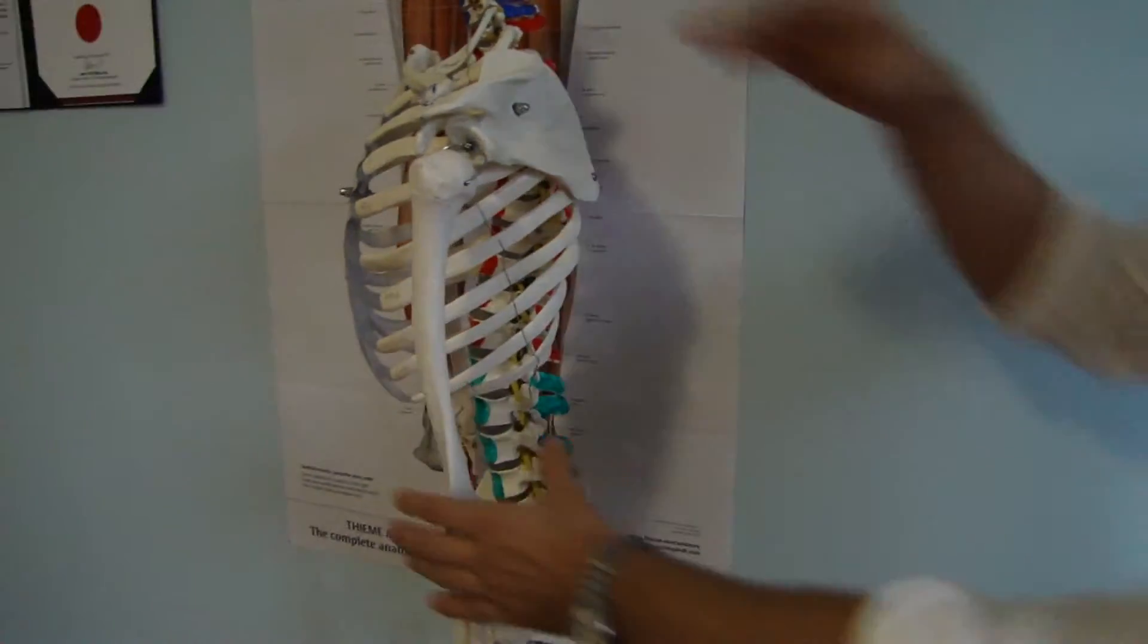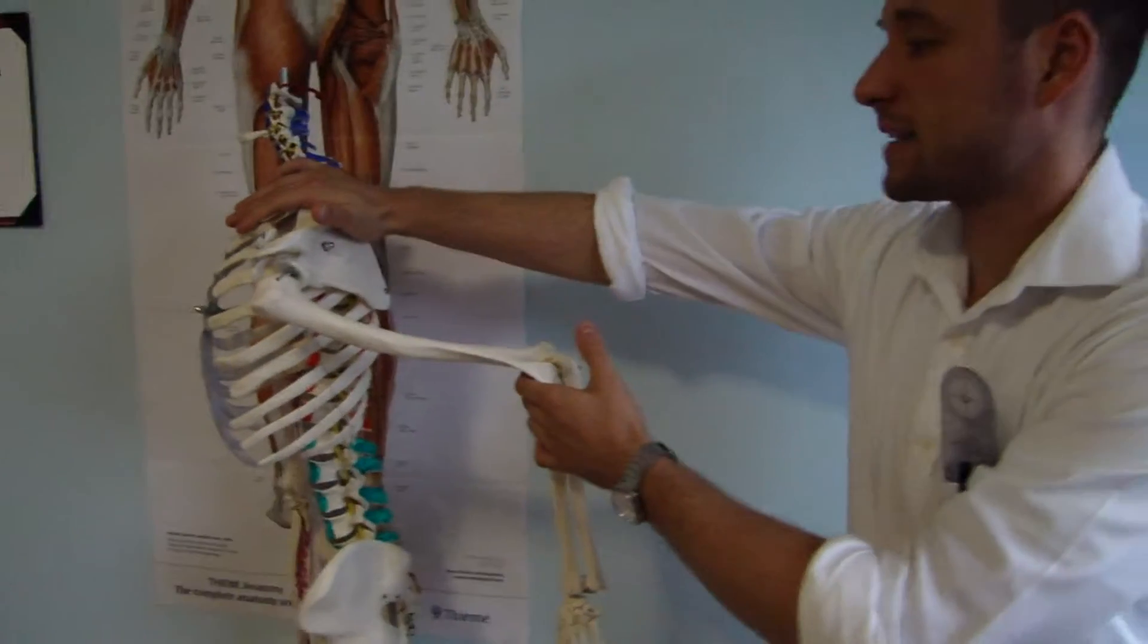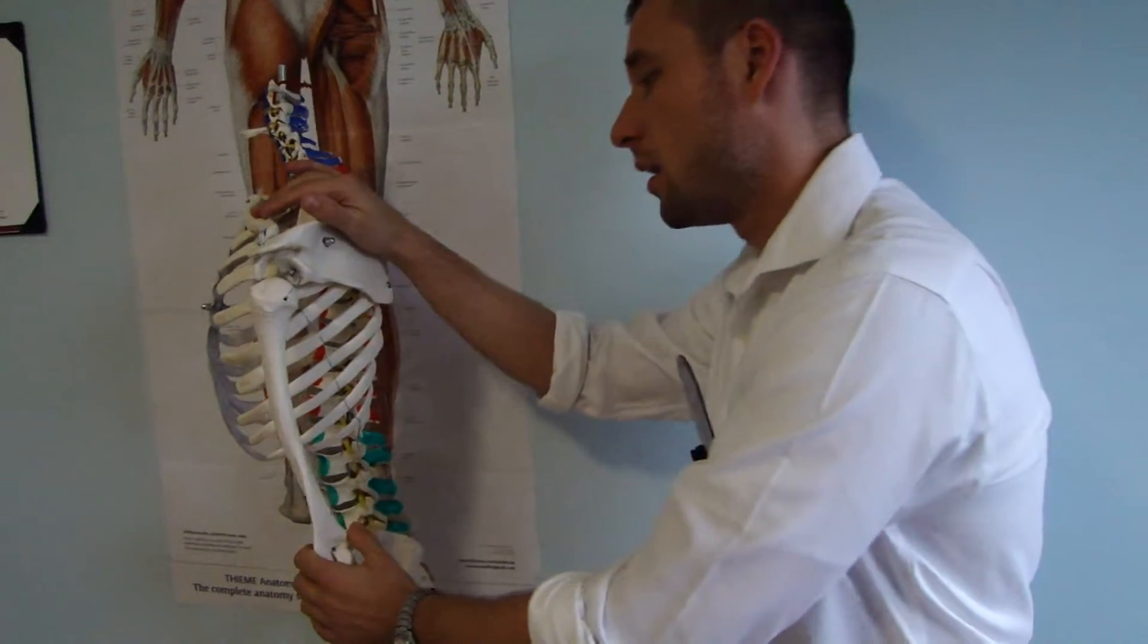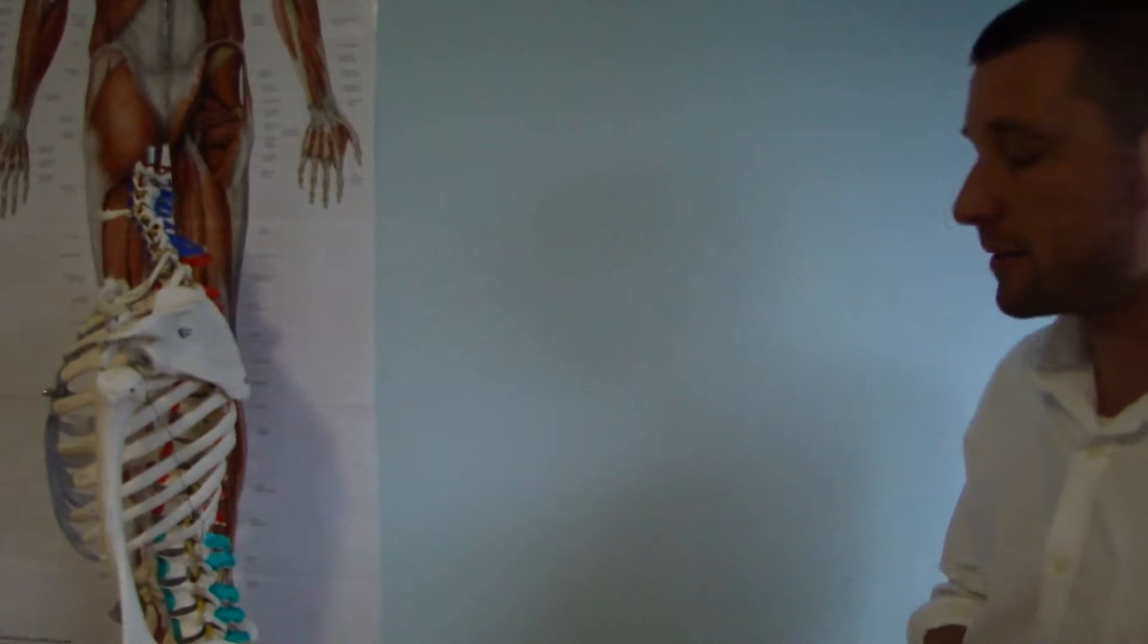Another move is extension. Extension in GHJ joint. Three main muscles: latissimus dorsi, deltoid pars spinalis and teres major.